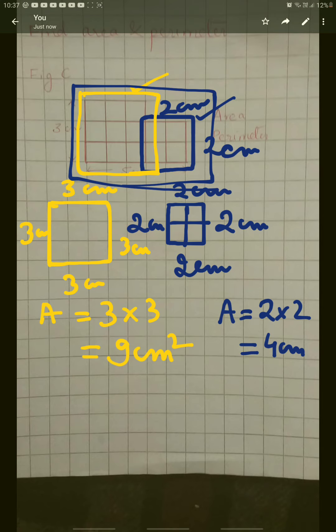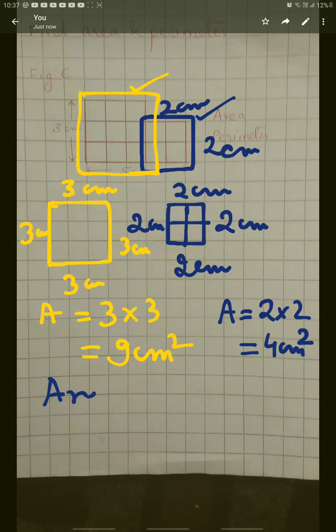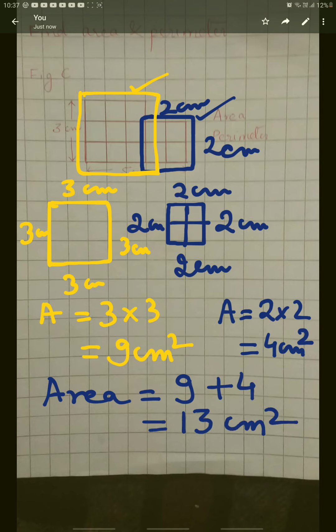Because we have to find the area of the whole figure, we will simply add the area of the yellow square and the area of the blue square. So the area of this figure is 9 plus 4 equals 13 centimeter square.